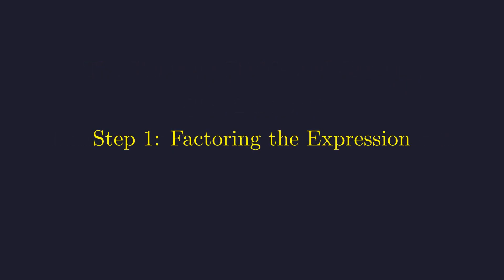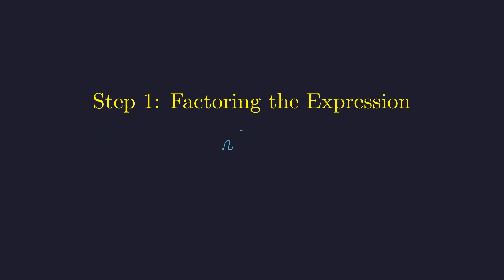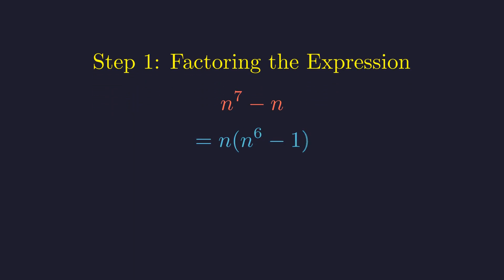Now, let's get our hands dirty with some algebra. The best way to understand this expression is to factor it completely and see what structure emerges. Starting with n^7 - n, right away we can see that n appears in both terms, so let's factor it out. This gives us n(n^6 - 1).